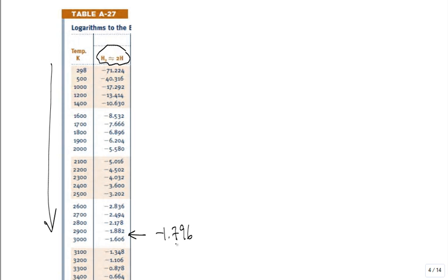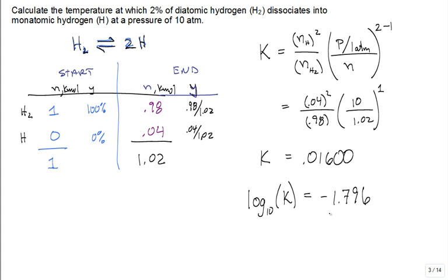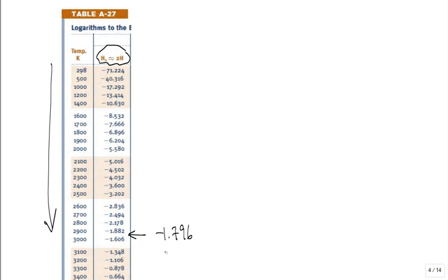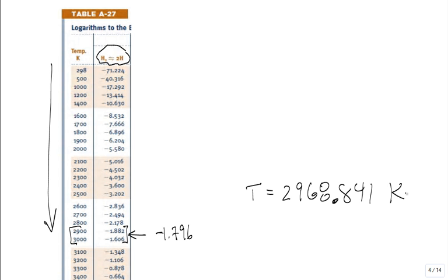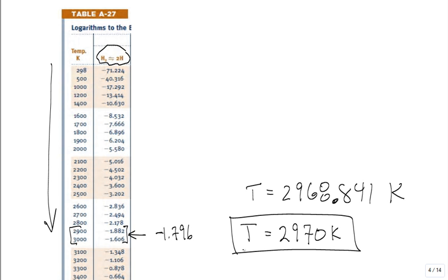Last step — do the interpolation. Negative 1.796 falls between two table values. Interpolating to three significant digits gives a temperature of 2970 K.